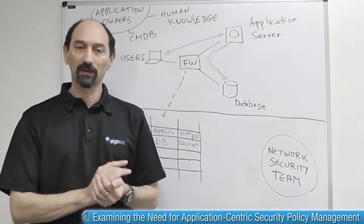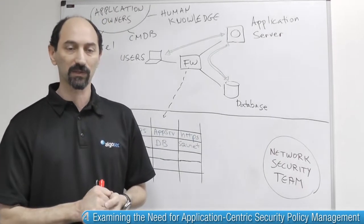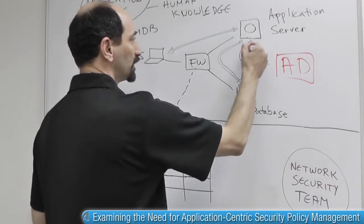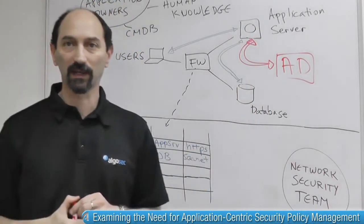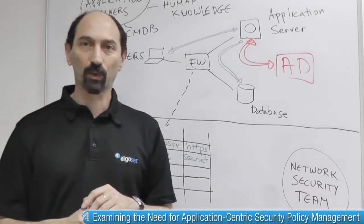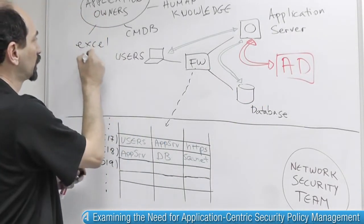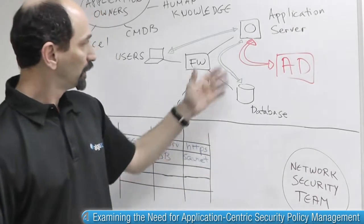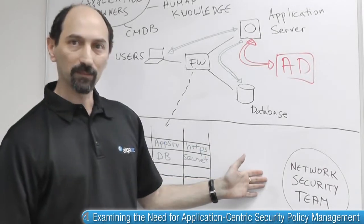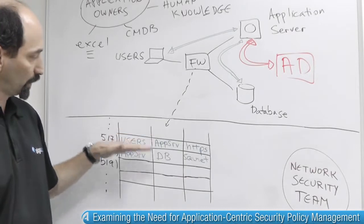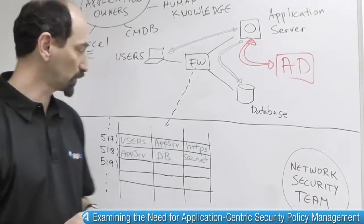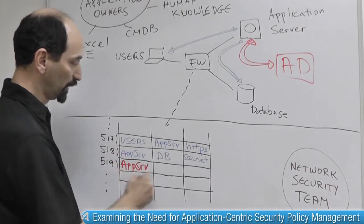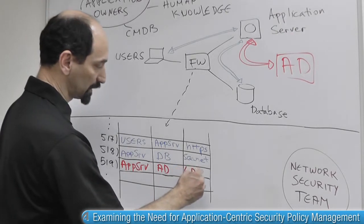Now imagine what happens when there is a change that is required. Imagine that there's a new version of the application that also needs to integrate with the organization's Active Directory. So there is going to be a new connectivity pattern from the application server to the Active Directory. From the application owner's point of view, they know that they need this, so they would record it into their Excel spreadsheet and would need to make a request from the network security team — they would open a change request to make this happen. But the network security team has to understand what is required and translate the request into firewall policy rules. At the end of the day, we would like a new rule injected in the right place into the policy — something like: allow traffic from the application server to the Active Directory using the correct service, in this case LDAP.